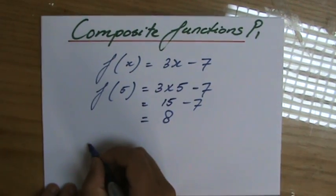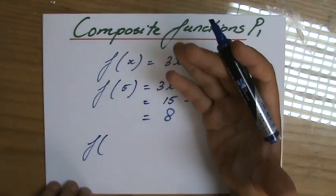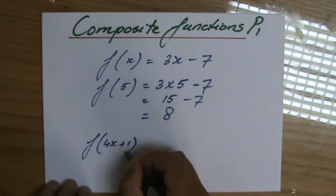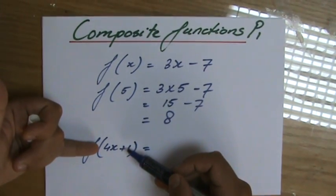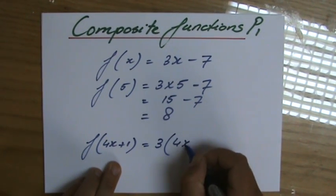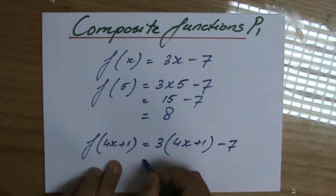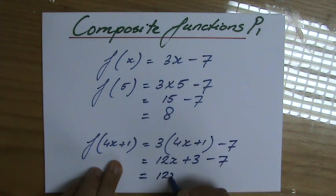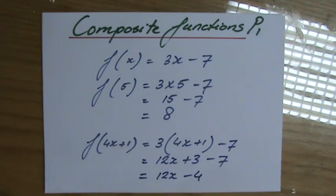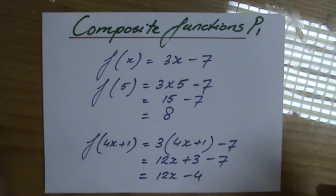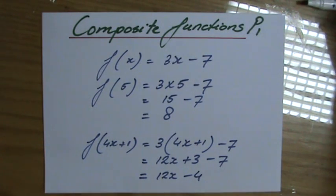Then we went to the next step and said: let's evaluate it not for a numerical value like 5 or 12, but for an expression — for instance, 4x + 1. So rather than x, we substitute 4x + 1 into the function. That becomes 3 times (4x + 1) minus 7. Expanding the brackets gives 12x + 3 − 7, which equals 12x − 4. So we evaluated f(x) for the expression 4x + 1.